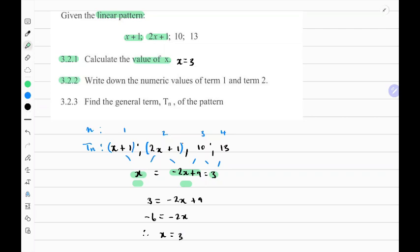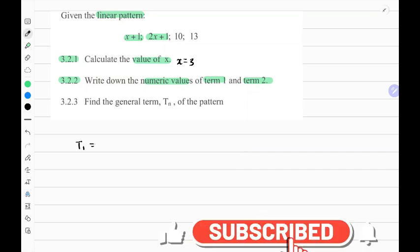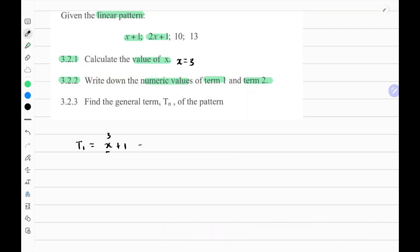So the second question says, write down the numeric values of term 1 and term 2. So in the original number pattern, we saw term 1 is expressed in terms of x, that is x plus 1. But we found x to be 3, so we can substitute 3 plus 1. So term 1 is 4, and term 2 in terms of x is given as 2x plus 1. We can substitute once again, that is 2 times 3 plus 1 is equals to 7. So the new linear pattern as numbers can be written as 4, 7, 10, and 13.